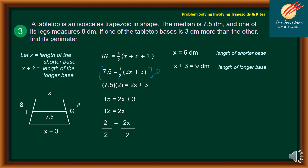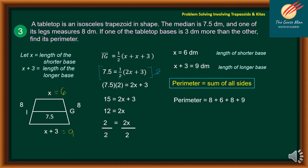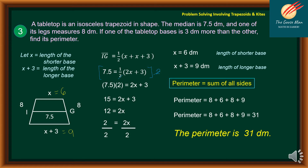Now that we know the longer base and the shorter base, the next step is to find the perimeter. Take note that the perimeter is the sum of all sides. Looking back at our illustration, the shorter base X is equal to 6, and the longer base X plus 3 is equal to 9. To find the perimeter, we simply add all the sides: 8 plus 6 plus 8 plus 9. The perimeter is equal to 31 decimeters.